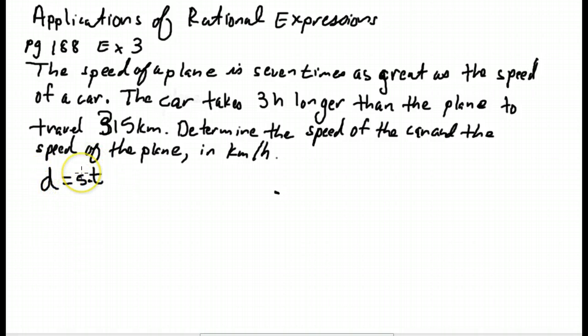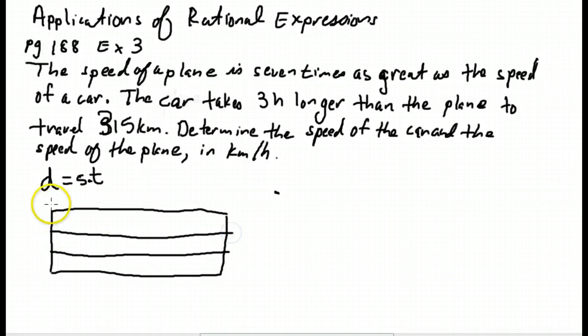And of course this equation may be rearranged. Common solving method with word problems, you have to lay out your variables. And one of the easiest ways to do that with the distance speed time problem is with a table. So in this table, we are going to have the car, the plane, and expressions for distance, speed, and time.